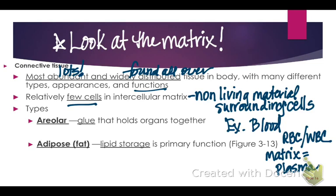Compare that to epithelial tissues. Epithelial tissues are tightly packed together with no matrix. If each of you was a cell and the space around you was the matrix, you would be a connective tissue right now because there's lots of space around you. But if I pushed all the desks together side by side touching each other, you would be an epithelial tissue. Connective tissue has lots of space between the cells.